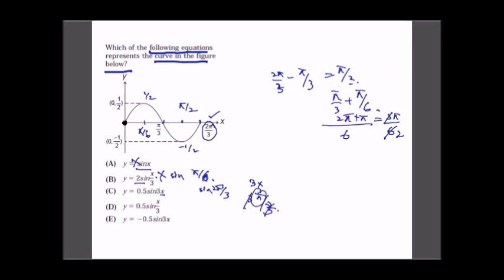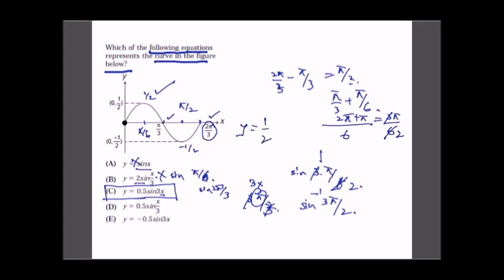We need to check the equation y = (1/2)sin(3x). At x = π/6: sin(3·π/6) = sin(π/2) = 1, and 1 × 0.5 = 0.5 ✓. At x = π/2: sin(3π/2) = −1, and −1 × 0.5 = −1/2 ✓. So the answer is y = (1/2)sin(3x).